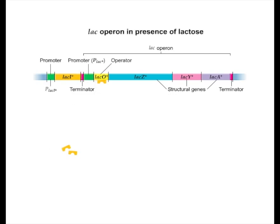When lactose is present, small amounts of it are converted to an isomer called allolactose, which acts as an inducer to turn on the lac genes.